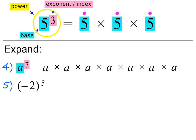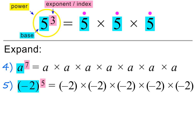In the next example, we are asked to expand minus 2 all to the power of 5. The base here is everything inside the bracket, and the exponent is 5. So we need to multiply minus 2 by itself 5 times. Please note, it is always a good idea to write negative numbers inside brackets.